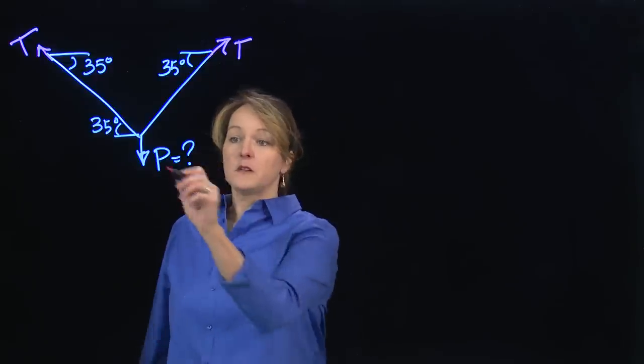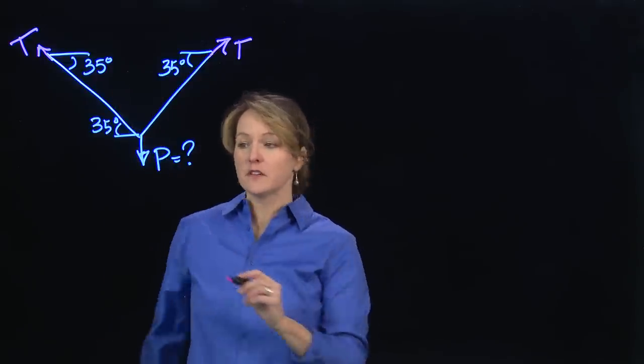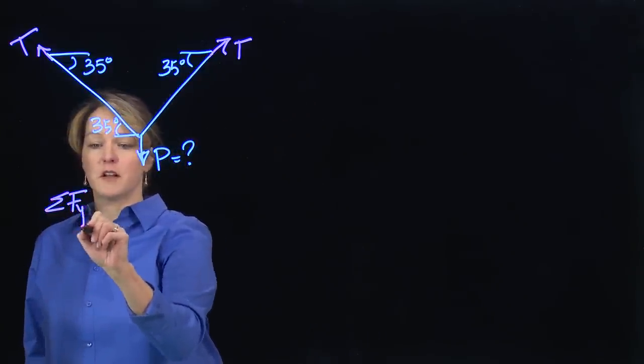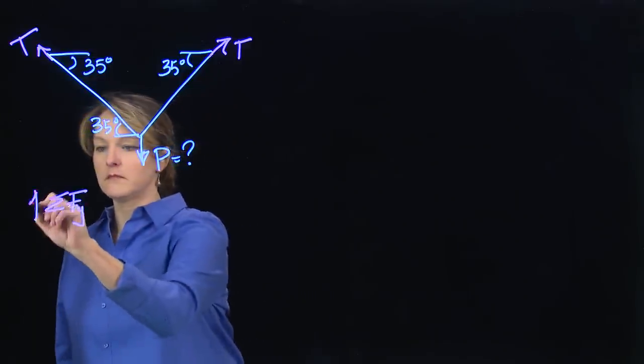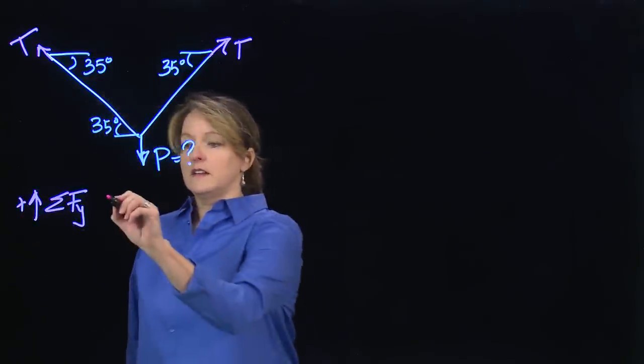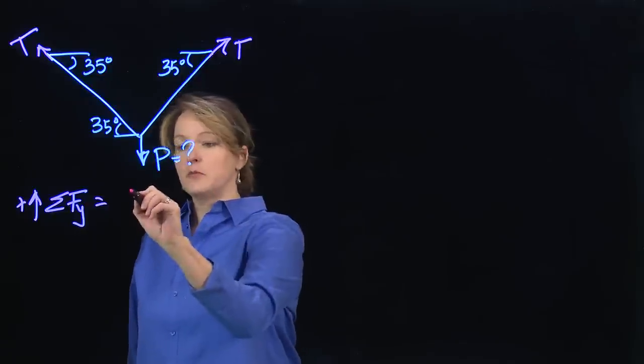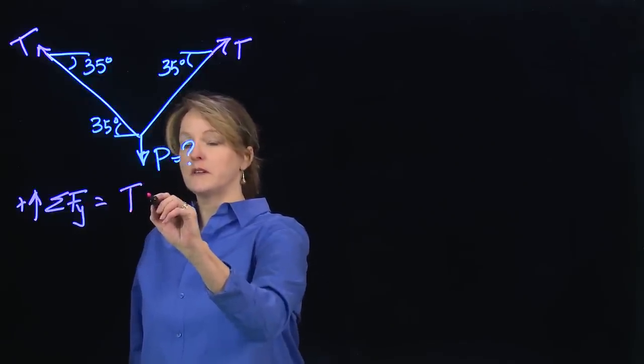But now to solve for this P, I'm going to start with vertical equilibrium. So I'm going to sum my forces in the Y direction. And in this case, I have two Ts acting upward. I'll separate them so we know where they're coming from.